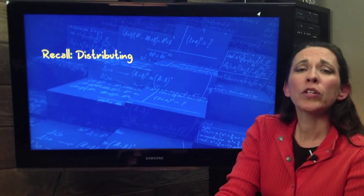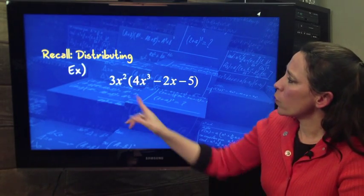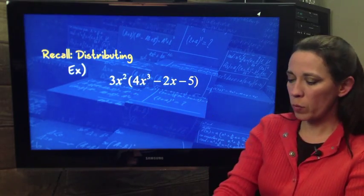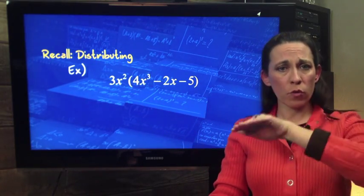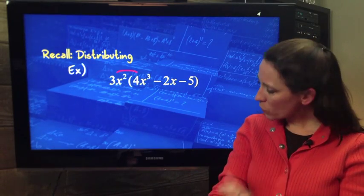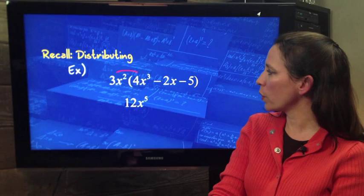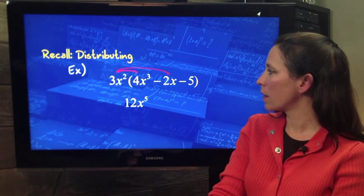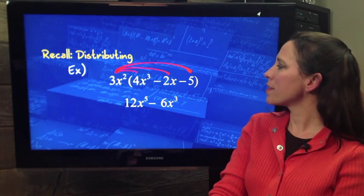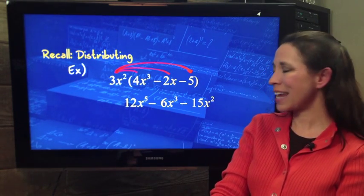Now let's recall distributing. If we have the monomial 3X squared here being multiplied by this trinomial, we would distribute that 3X squared into every term by multiplication. So when we distribute to the first term, we would get 12X to the fifth, to the second term, negative 6X cubed, and the third term negative 15X squared.